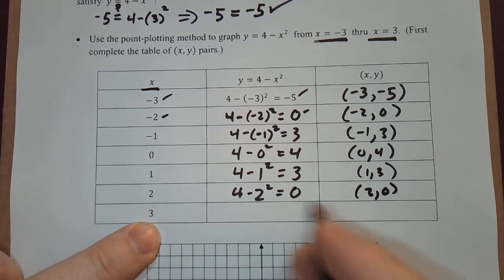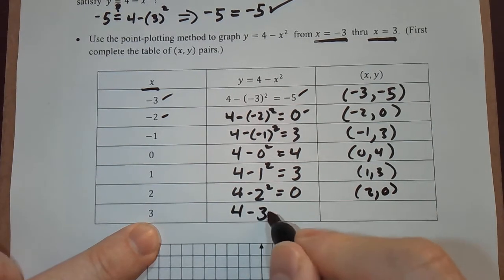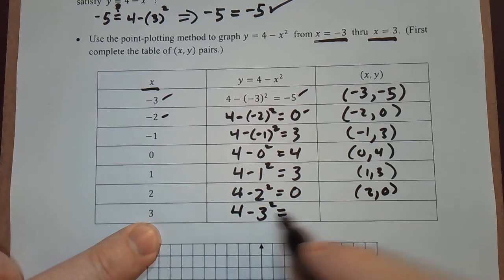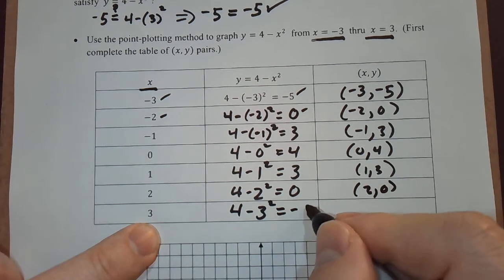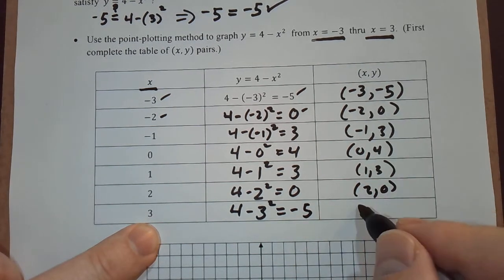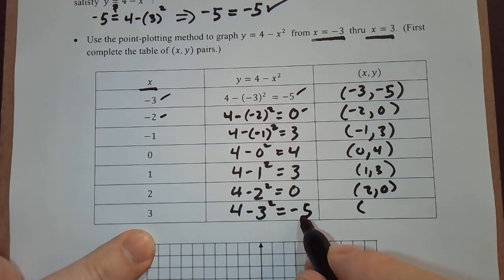Last number is 3. 4 minus 3 squared. 4 minus 9. Negative 5. So that gives us 3, negative 5.